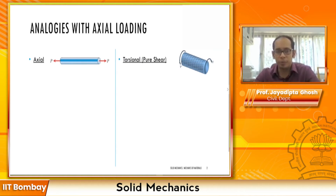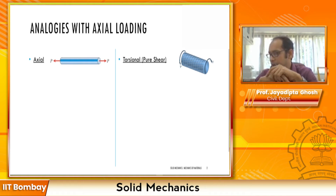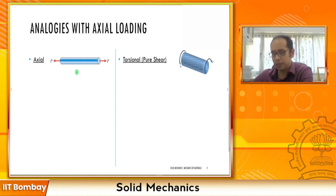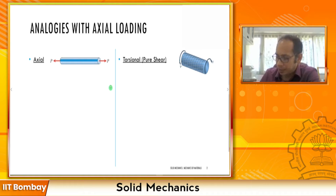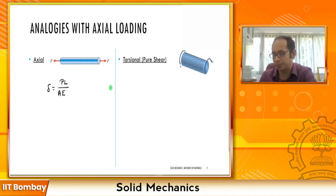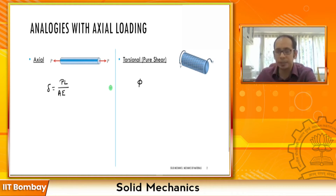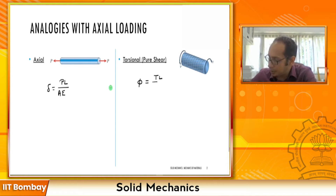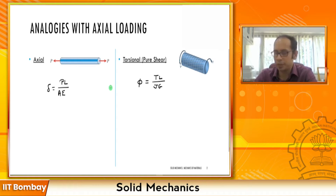Let me jog your memory on what we have already learned. For the axial case — a bar with load P at one end and P at the other — the deformation delta equals P times L divided by A times E. For the torsion case, the angle of twist phi equals T times L divided by J times G. Can you start seeing the analogy between these two formulas?